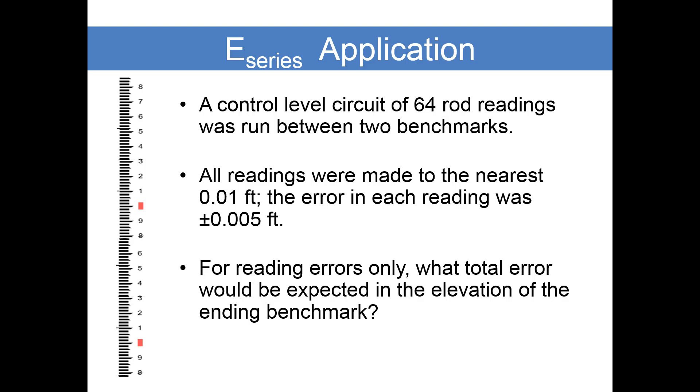If we oversimplify this, we could say 64 rod readings times 0.005 works out to be 0.32 feet, and that's not reasonable because that assumes that all the errors have the same sign and the same size. That's not really the case because some of the errors will cancel each other out. Some will be positive, some will be negative.